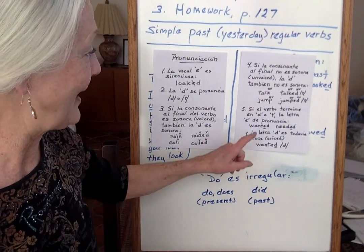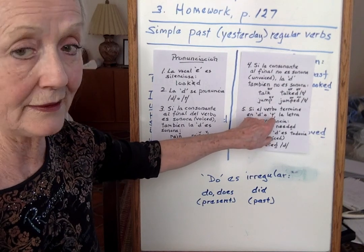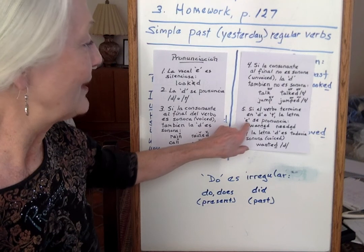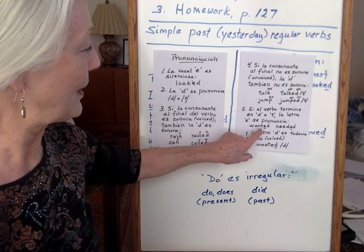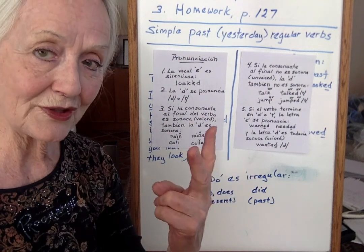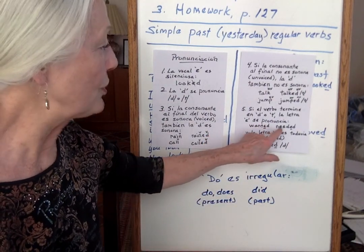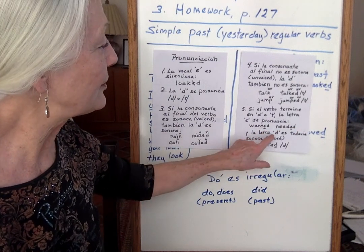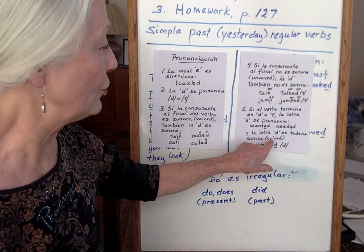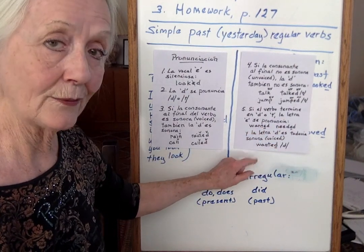Importante. Si el verbo termina en la letra D o T, la letra I se pronuncia. For example: 'want' → 'wanted'. Tenemos dos sílabas aquí — 'wanted'. Or 'needed' — 'needed'. Y la letra D es todavía sonora — voiced D. 'Wanted', 'needed'. Es un poco complicado, pero es así.